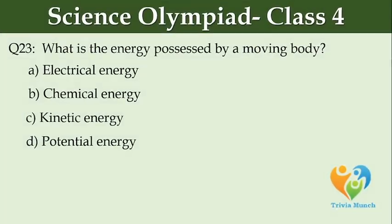What is the energy possessed by a moving body? Option A: Electrical energy, Option B: Chemical energy, Option C: Kinetic energy, Option D: Potential energy.